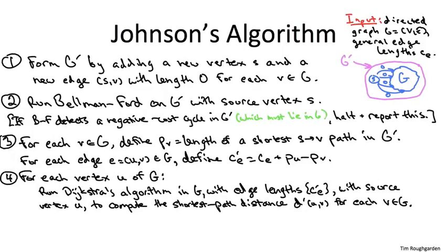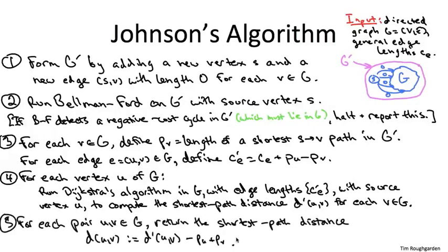There's one final piece of bookkeeping. The shortest path distances D primes computed in step four are with respect to the modified costs C prime, but we need to output shortest path distances with respect to the original lengths C. Fortunately, there's an easy way to extract the true shortest path distances from the D primes: the D primes are off by exactly P sub U minus P sub V. So to recover the true distances, we subtract that term back off. That's step five. This completes Johnson's algorithm, which is a reduction from all pairs shortest paths with general edge lengths to n plus one instances of the single-source problem — only one with general edge lengths, and n with only non-negative edge lengths.